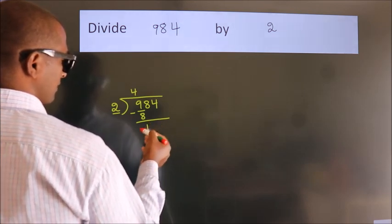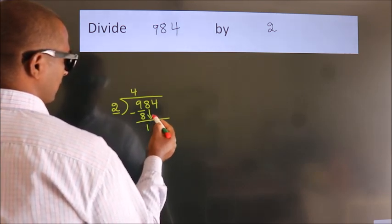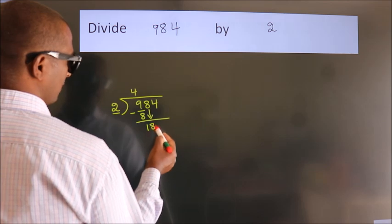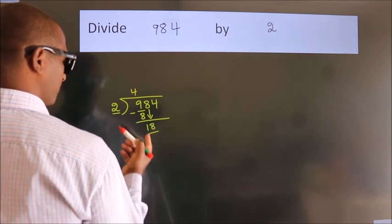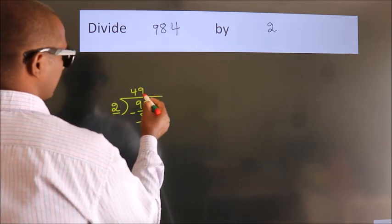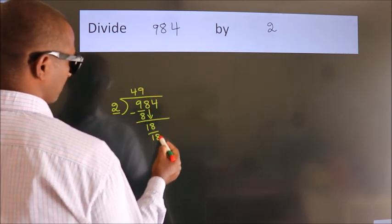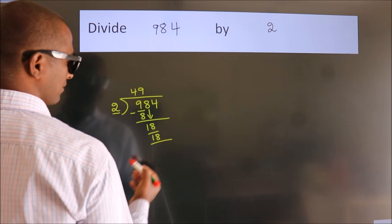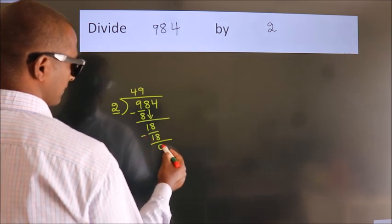After this, bring down the beside number. So 8 down. So 18. When do we get 18? In 2 table. 2 nines, 18. Now, we subtract. We get 0.